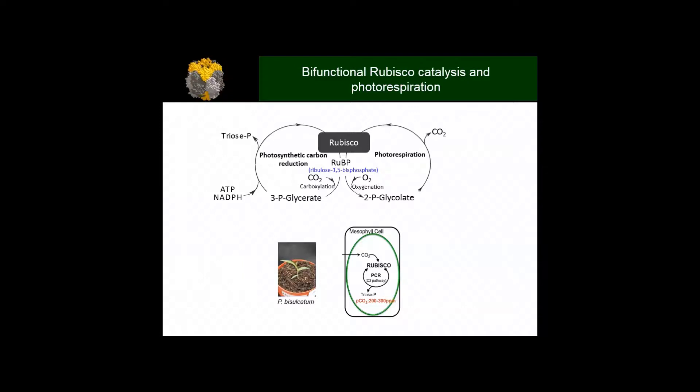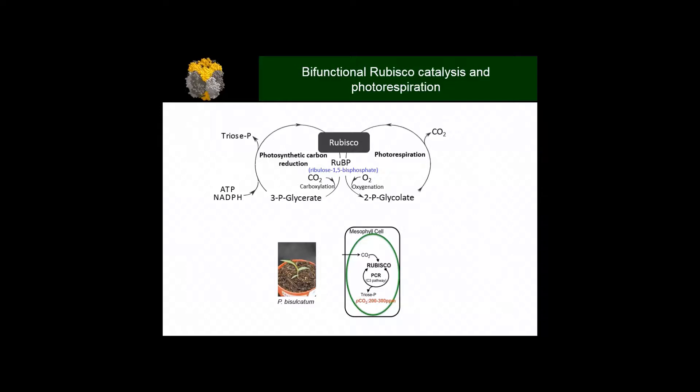Rubisco is a bifunctional catalyst that confuses its substrate CO2 with oxygen. When it fixes CO2, it's through the productive cycle of the photosynthetic carbon reduction cycle to produce triose phosphates that are the building blocks for carbohydrates. Unfortunately, it mistakes CO2 for oxygen, leading to photorespiration which is energetically wasteful for the plant. Rubisco specificity looks at the reactions between carboxylation and oxygenation.